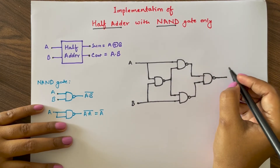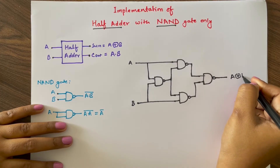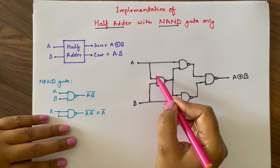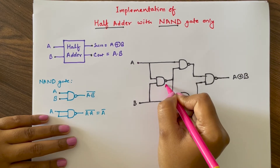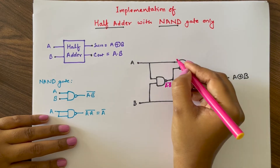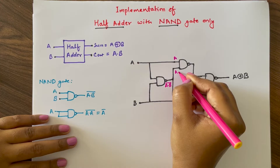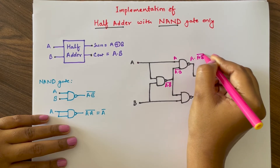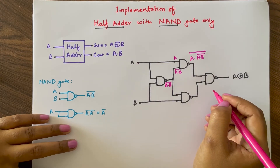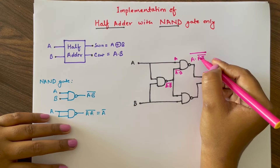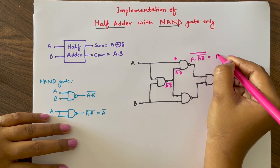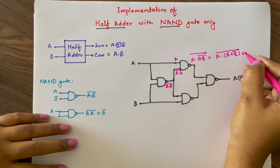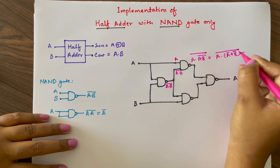The output of this whole circuit will be A XOR B. Let us see how this circuit gives A XOR B. The inputs are A and B for the first NAND gate, so the output will be A dot B whole bar. For the second NAND gate, inputs are A and A dot B whole bar, so the output will be A dot (A dot B whole bar) whole bar. Using De Morgan's law we can write A dot B bar as A bar plus B bar, so we get A dot (A bar plus B bar) whole bar, which simplifies to A dot A bar plus A dot B bar. Since A dot A bar equals zero, this becomes A dot B bar.